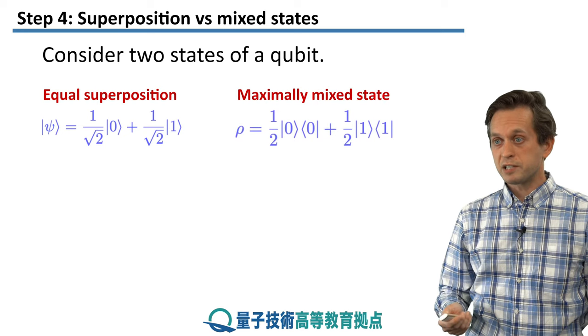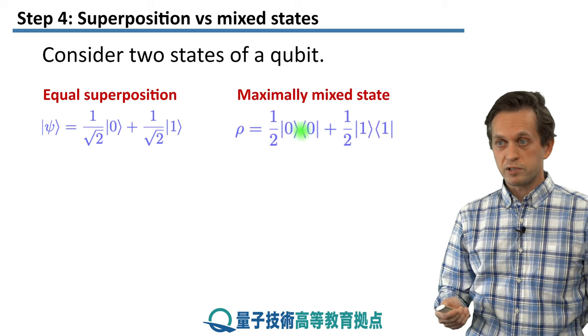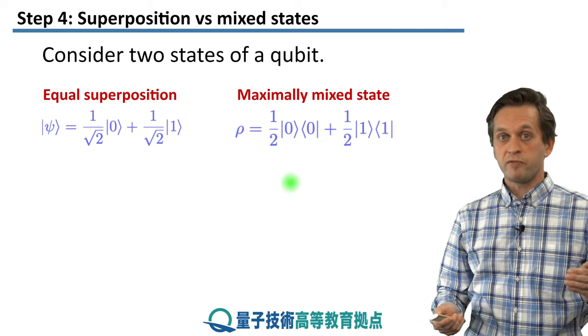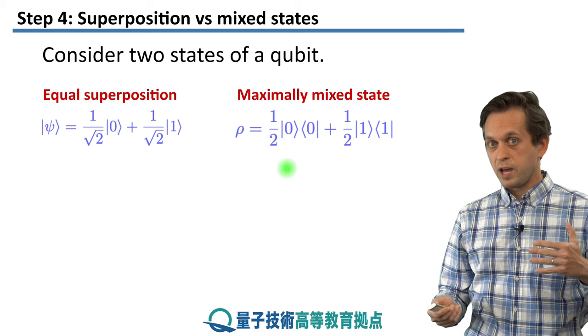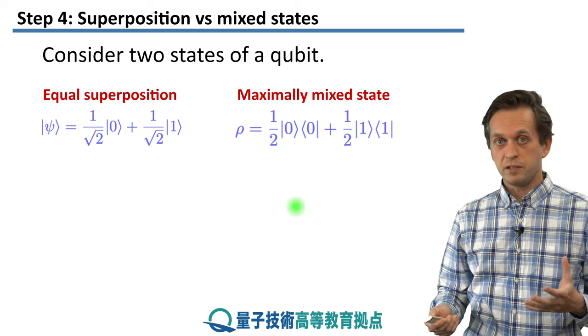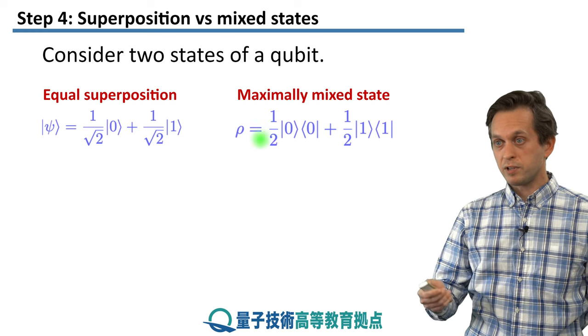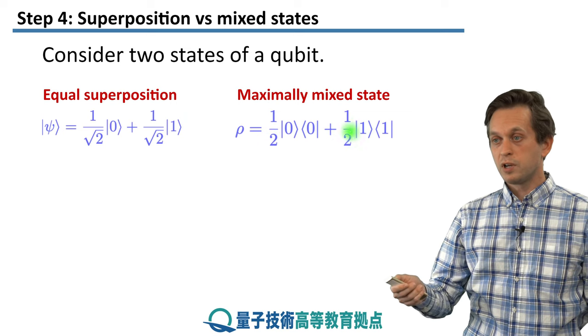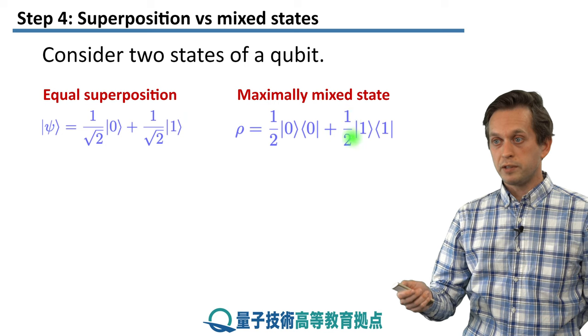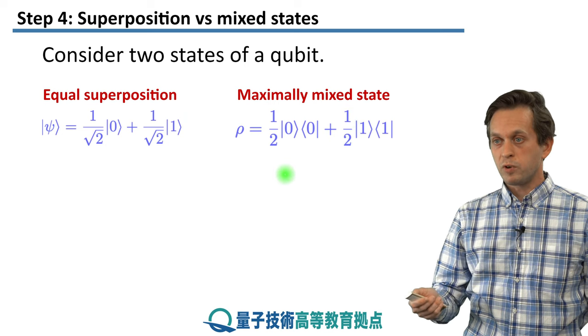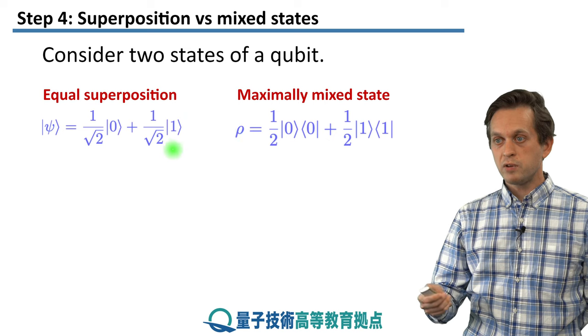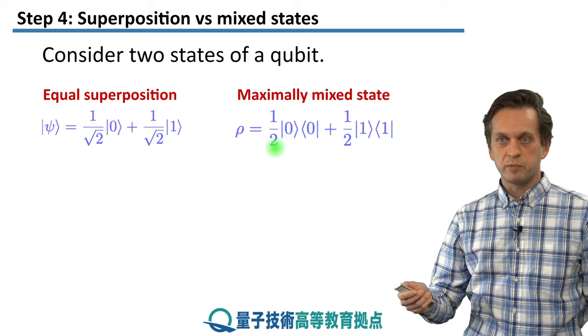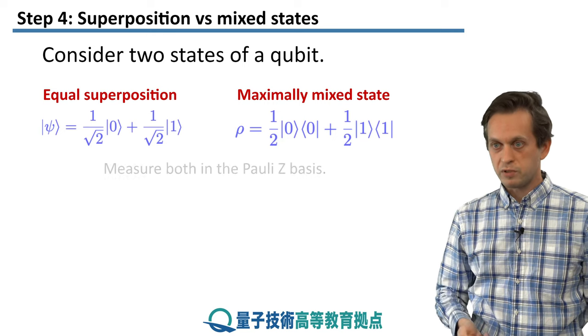We can also consider the maximally mixed state. So now this is not a pure state. This is a state that lives in the center of the Bloch sphere. So it's the furthest away from the surface of the Bloch sphere, so somehow we have the most uncertainty about the state itself. And we write it down as the outer product of the state 0, weighted by probability 1 over 2, and the outer product for state 1, weighted by probability 1 over 2. So if you just look at these two, they give you the same kind of intuition that this state is also 50% of the time in 0 and 50% of the time in 1. So what is the difference between them?